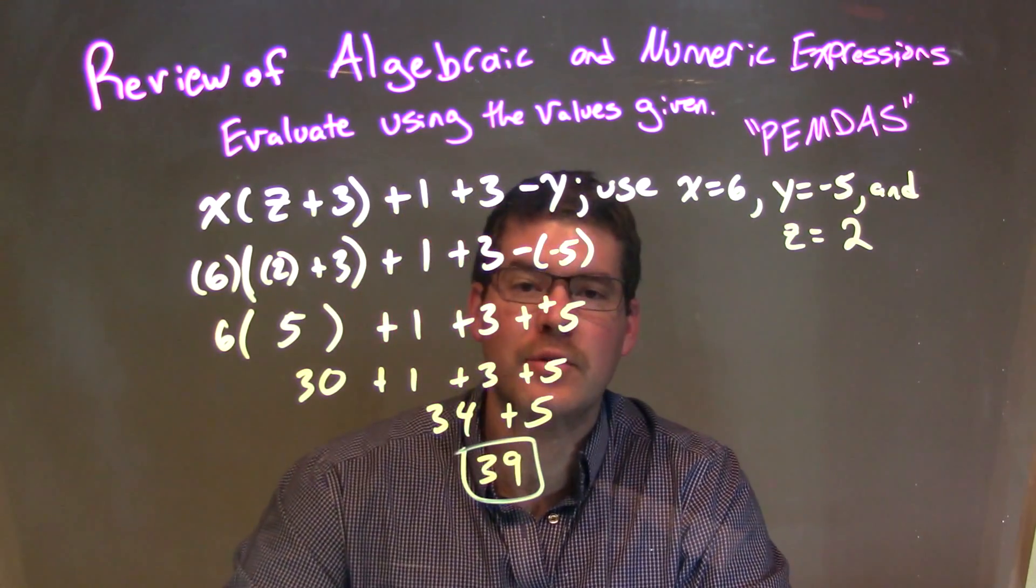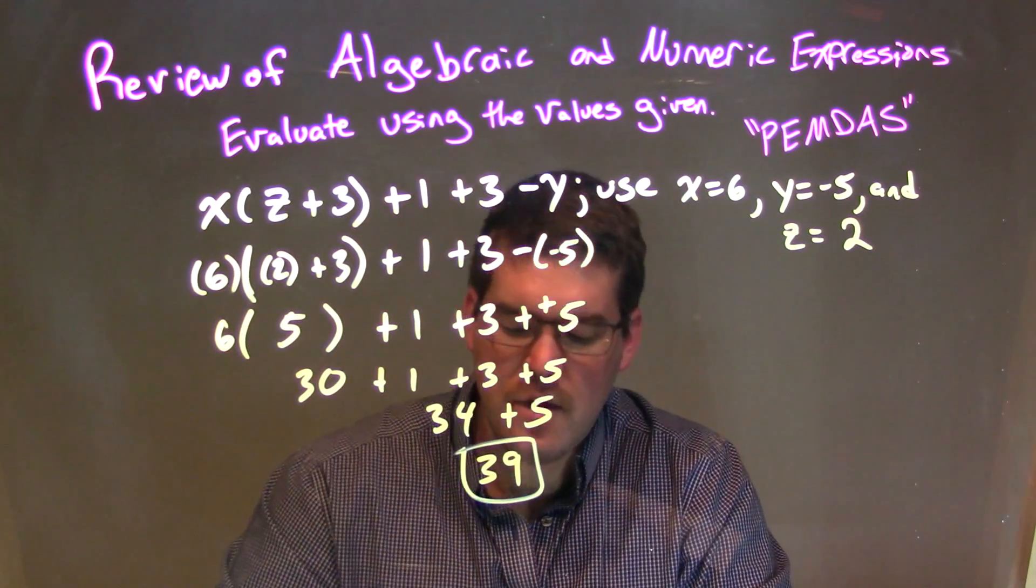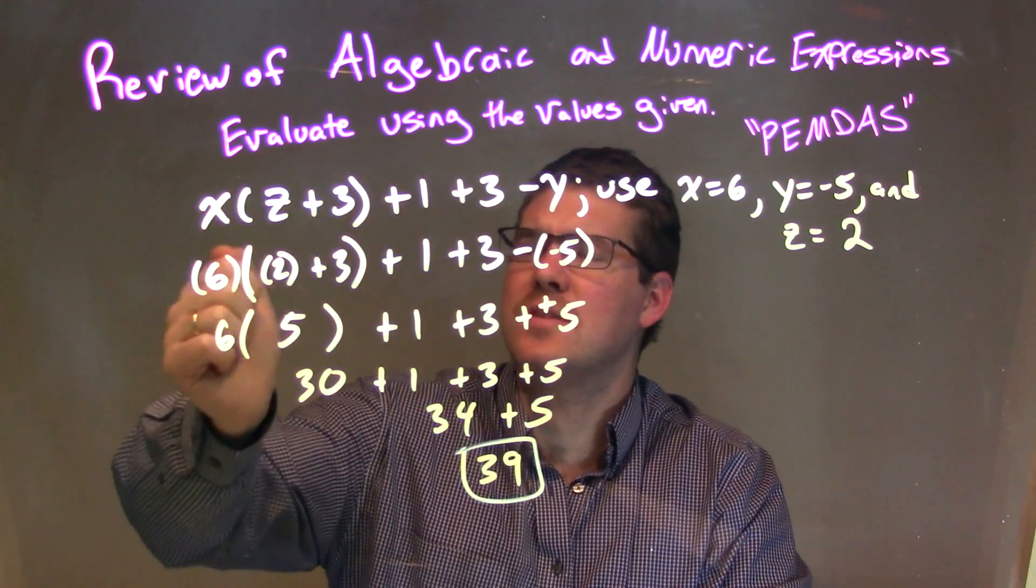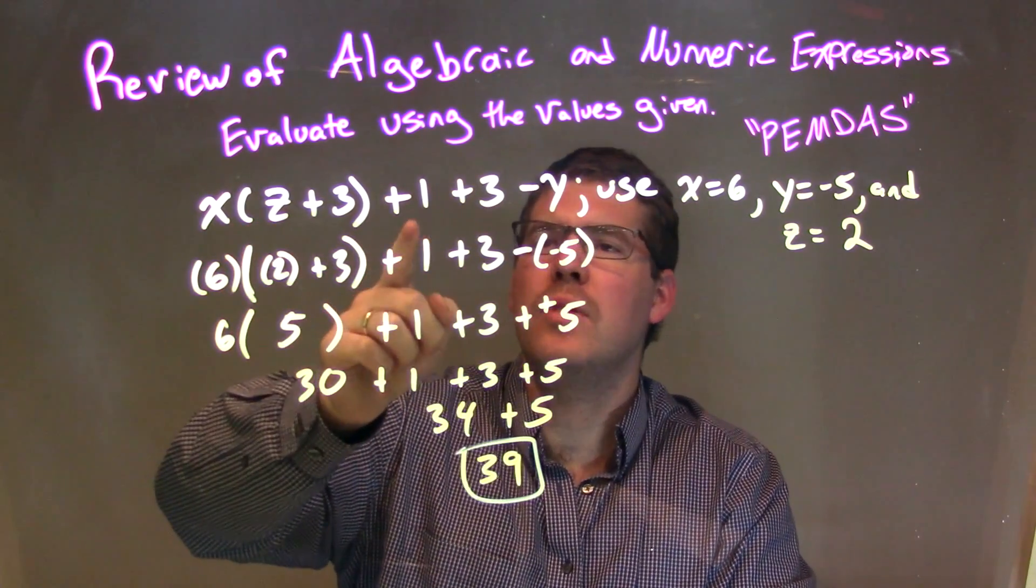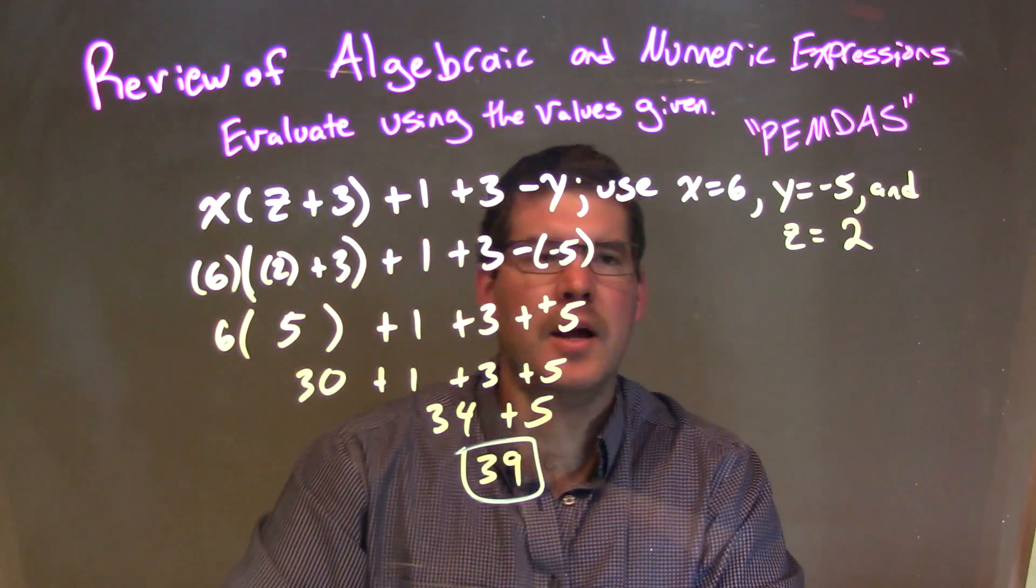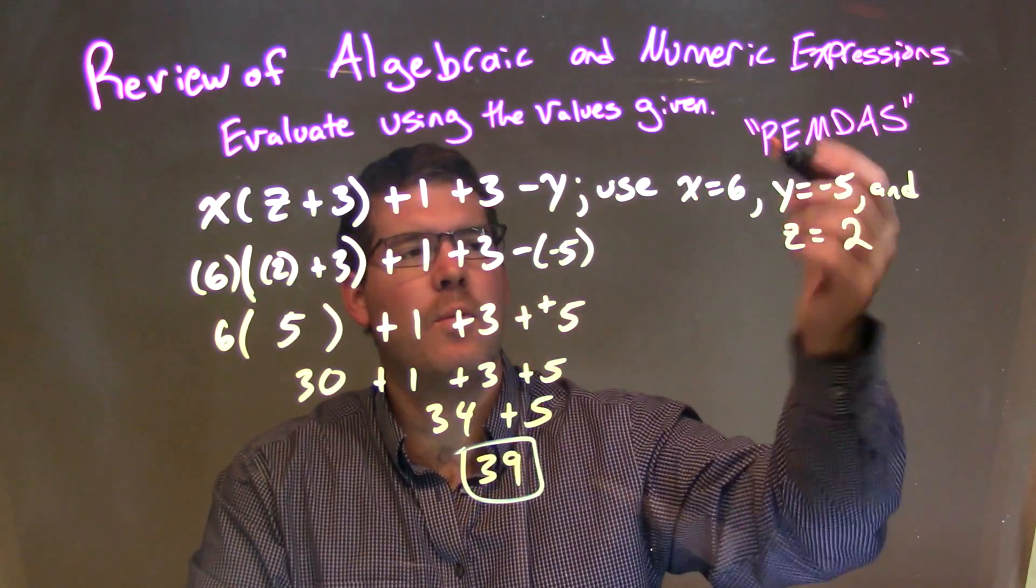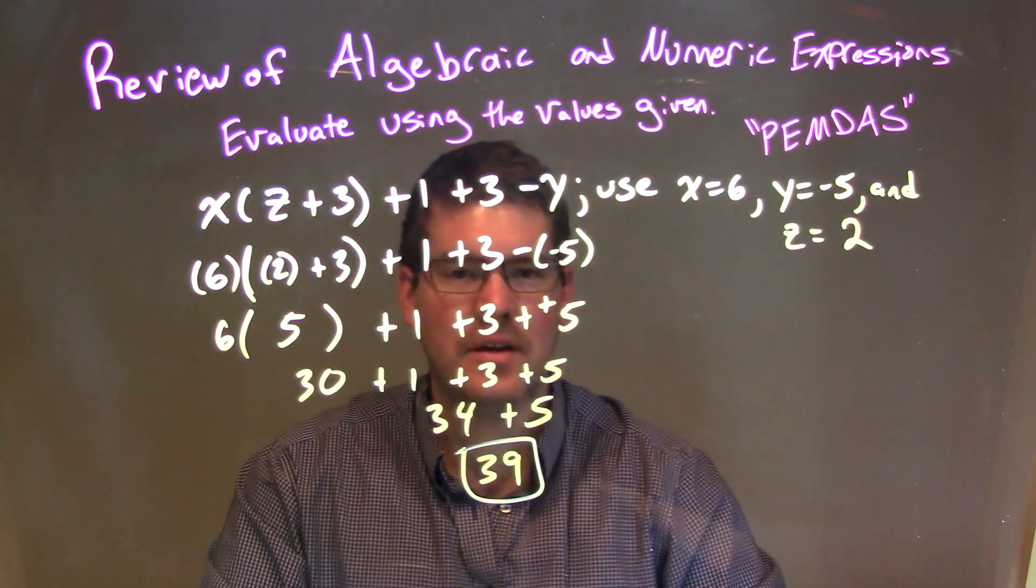And, there we have it. Our final answer is just 39. So, let's recap. We're given x times z plus 3, plus 1 plus 3 minus y. And, we're going to use x equal to 6, y equal to negative 5, and z equal to 2.